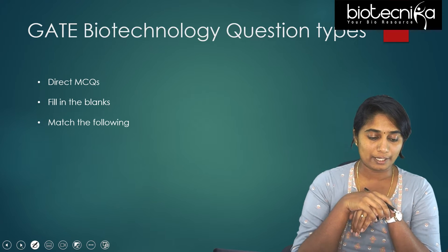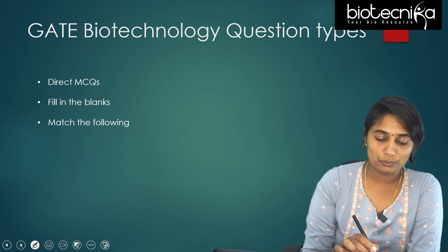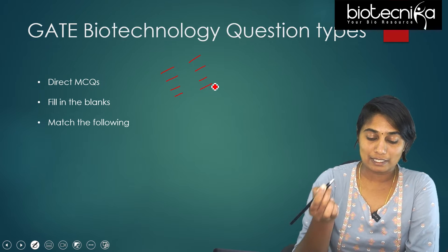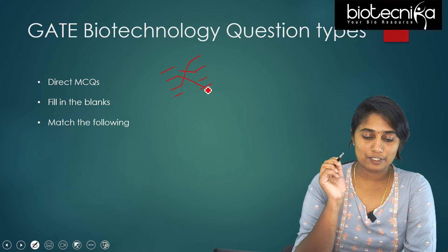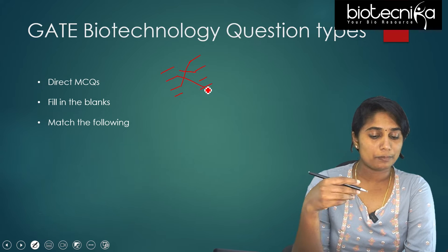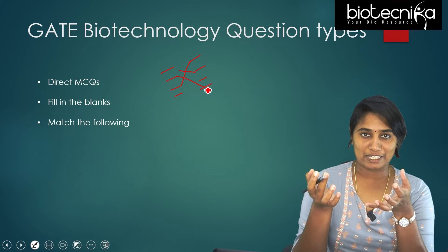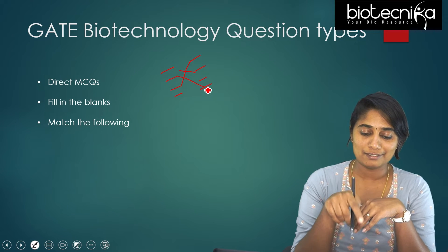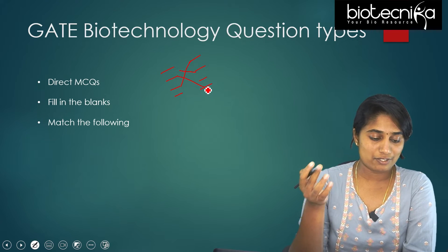The third is match the following. In match the following, it gets tricky. For example, they give you four enzymes and four functions of these enzymes, and you're supposed to match all of these with given options. If you know all the matches, it's well and good. But if, for example, you know the first one but are unsure about the second and have no idea about the third and fourth — even if a direct question about the first match alone would have been easily answered — in this case you have to know every single match to get the right answer.